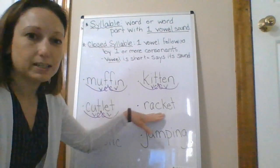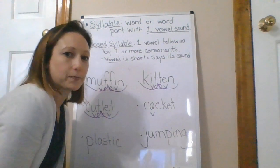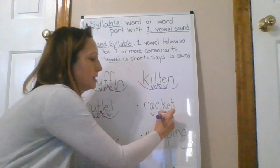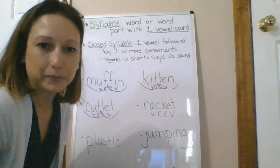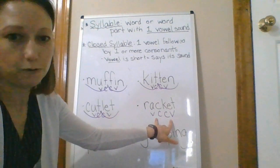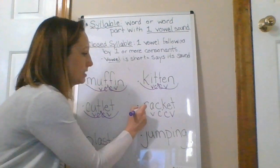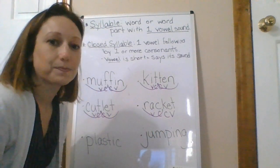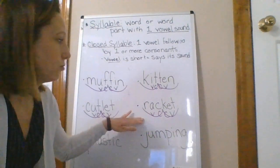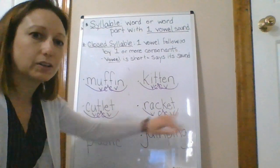Moving over to the next word. My first vowel is A, my C is a consonant, my K is a consonant, and my E is a vowel. When two consonants come between two vowels, divide between the consonants. My first syllable is 'rack,' my second syllable is 'et' — racket. What is all that racket? What is all that noise?